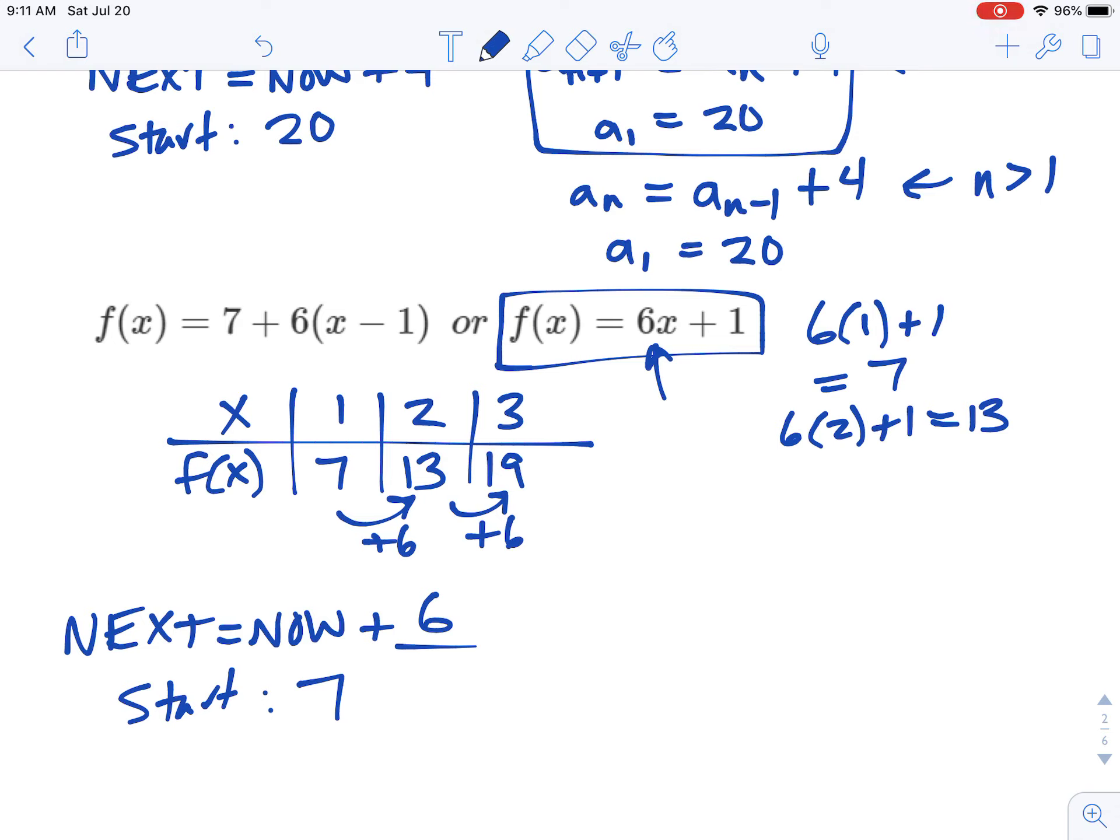And we're just going to use f of x notation. So the next term, f of x plus 1, would be the current term, plus 6. And then the first term, f of 1, is 7. That's how we would define this recursively. And this first part here would be when x is greater than or equal to 1.